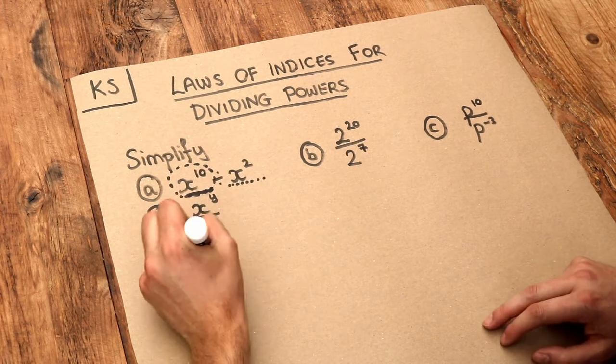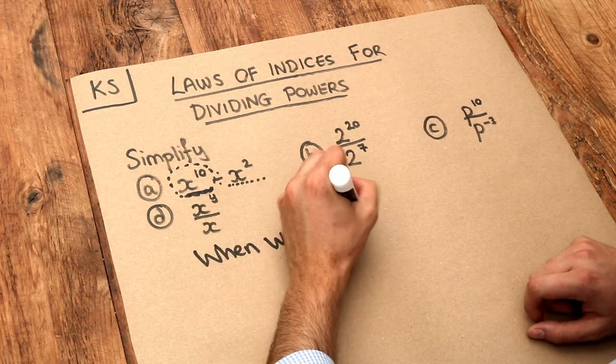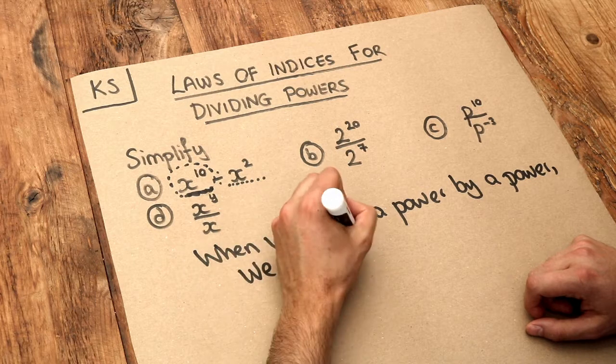The rule is when we divide a power by a power, we subtract the indices.